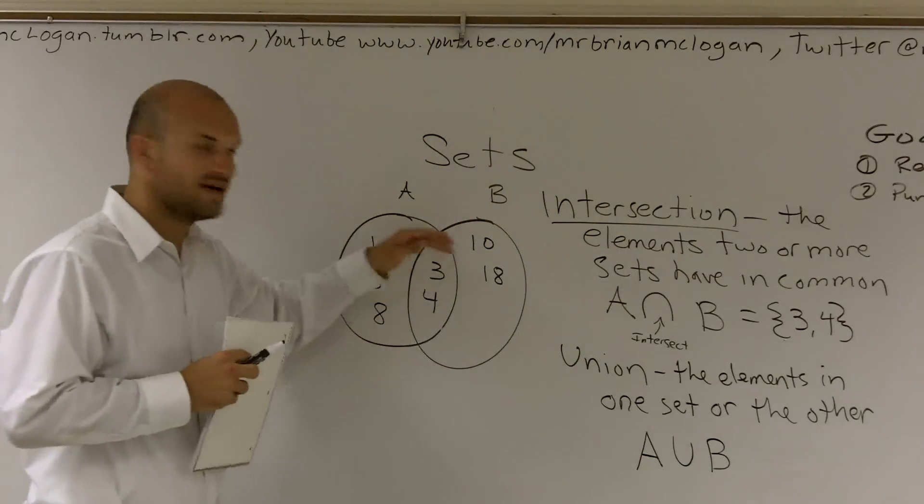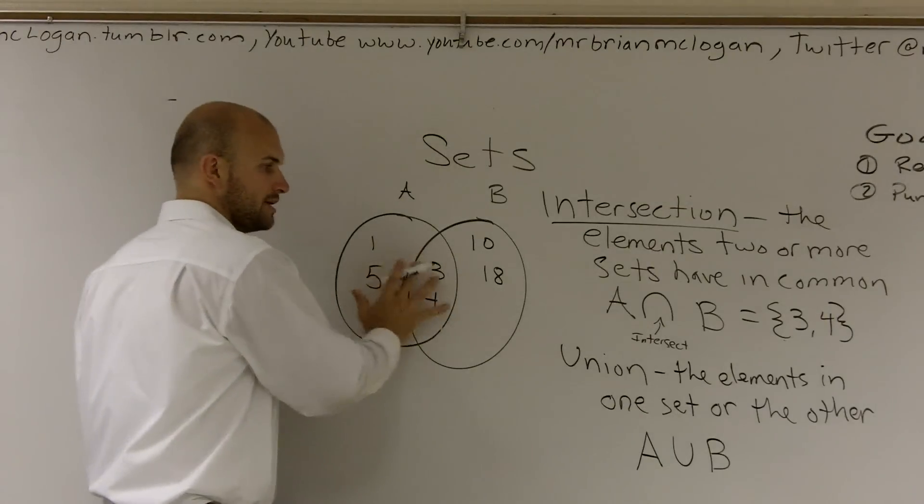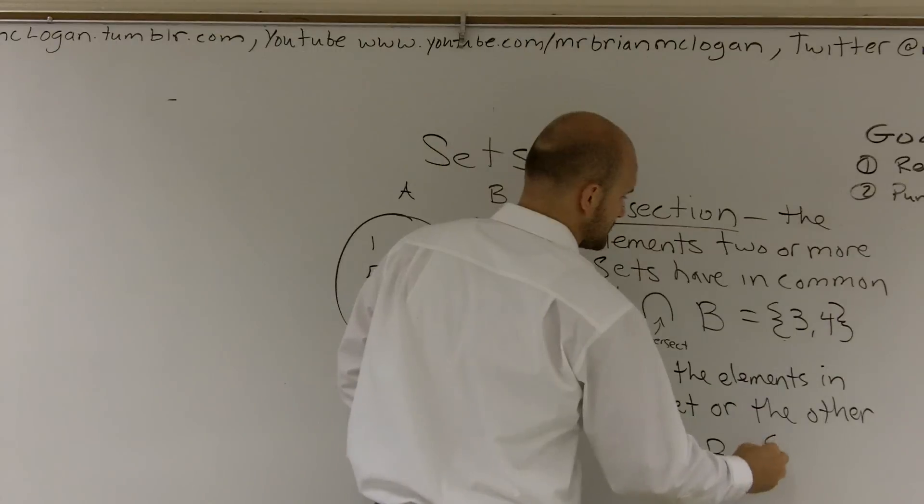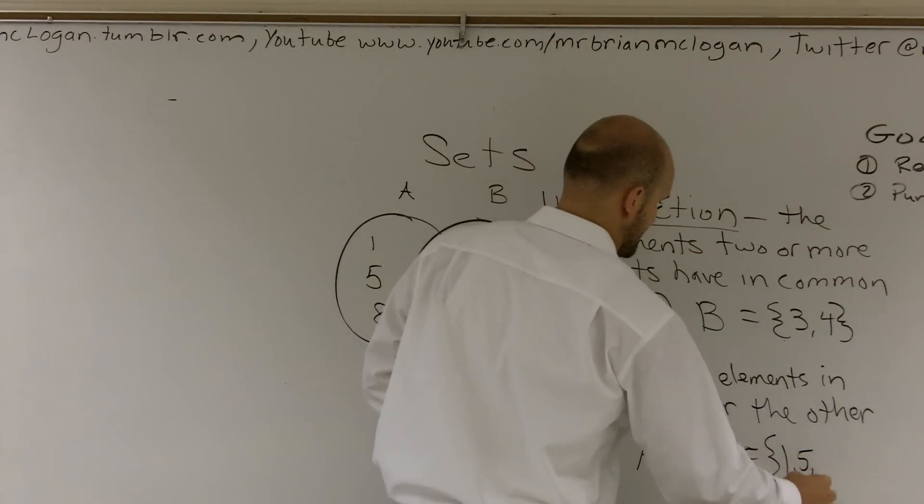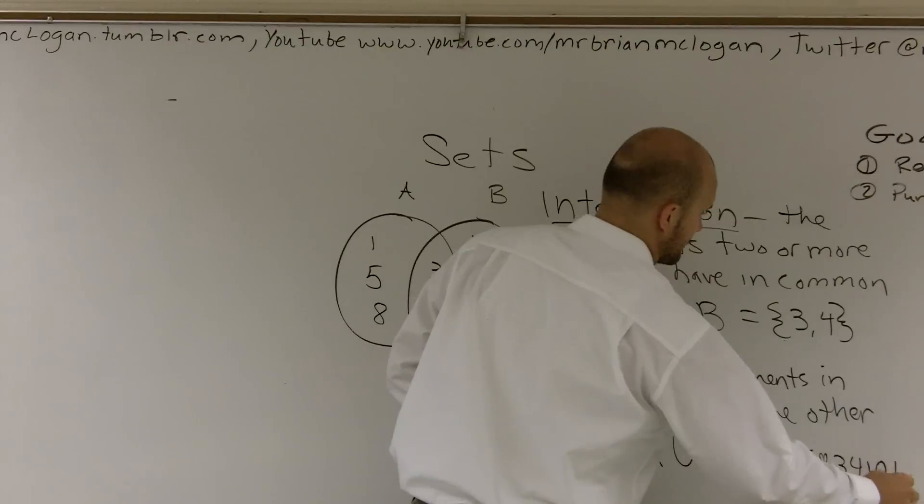And in this Venn diagram, this is actually going to be all of the elements. Because they're all in this A or they're also in B. So again, I'll use brackets. And that will be one, five, eight, three, four, ten, eighteen.